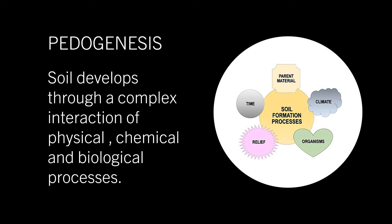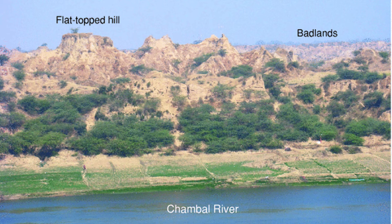Soil develops through a complex interaction of physical, chemical and biological processes. This soil formation process is known as pedogenesis. There may be soil erosion in areas of steep slope. Gullies offer an important example of soil erosion. Soil erosion makes land unsuitable for cultivation, and the land so developed is called a bad land. In this picture you can see the Chambal Basin, where River Chambal is flowing. These lands are known as ravines.